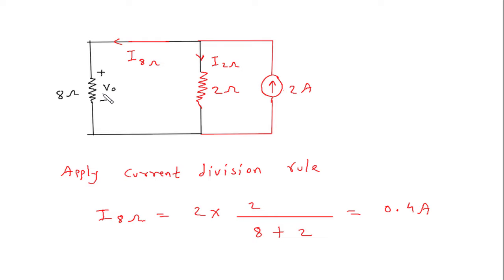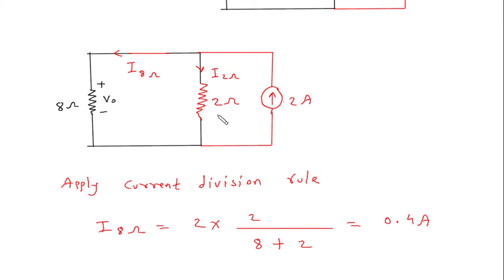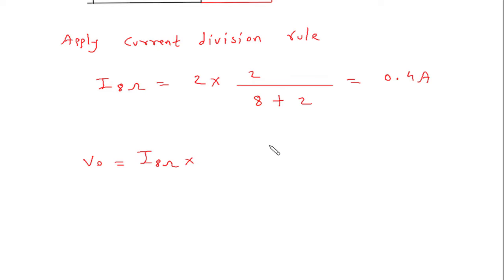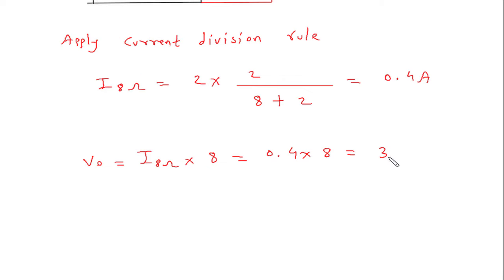Now we have to find Vo. So Vo is equal to current I8 ohm into resistance. Resistance is 8 ohm, so this will be 0.4 into 8. 0.4 into 8 will be 3.2 volt. Therefore Vo is equal to 3.2 volt.